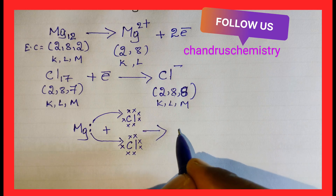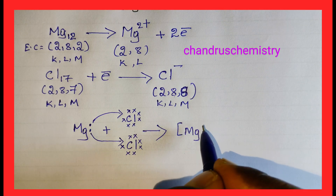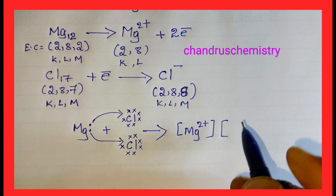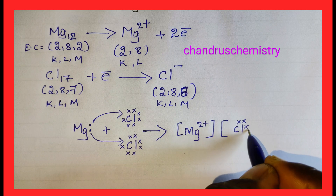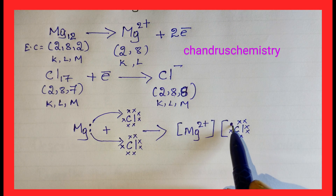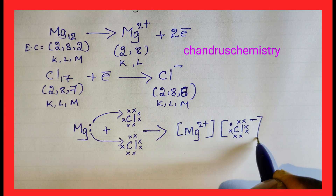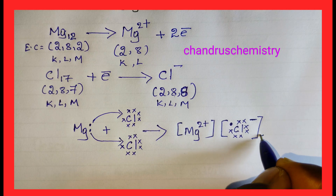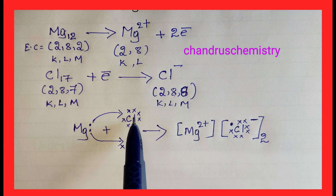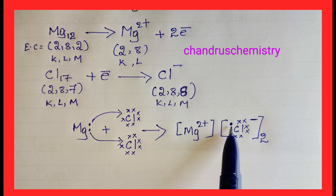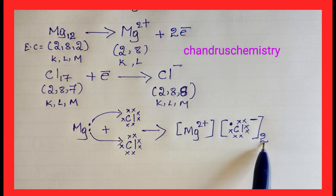Magnesium donates one electron to one Chlorine atom and one electron to the second Chlorine atom. After donating its 2 electrons, Magnesium acquires a positive charge and becomes the Mg2+ cation. Each Chlorine atom accepts one electron — with 7 original valence electrons plus 1 accepted electron, it becomes Cl- with 8 electrons. We write this as Mg2+ and [Cl-]2, with square brackets and a subscript 2 indicating two Chlorine ions.